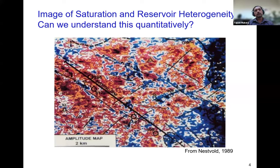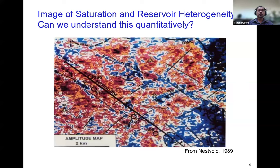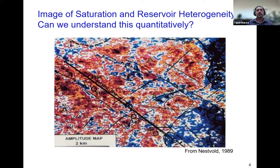Here's another example from Saudi Arabia. We are looking at a map with different amplitudes — reds and blues. The red corresponds to oil saturation while the blues are water saturation. This was a waterflood, and we can see how the water flows along major faults and fractures. This kind of interpretation is very important because we can figure out where the water is flowing and optimize the water flooding, identifying places where there is bypassed oil.